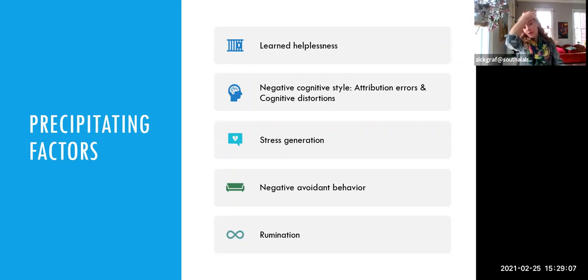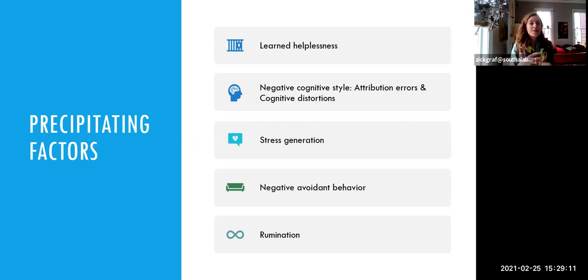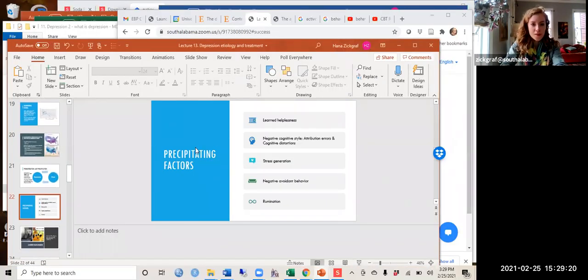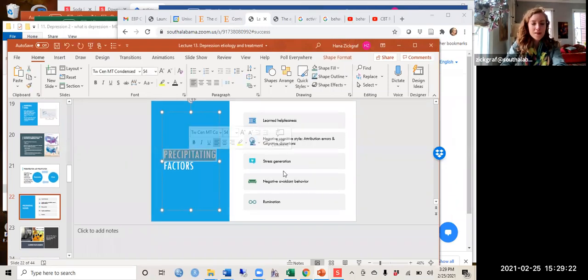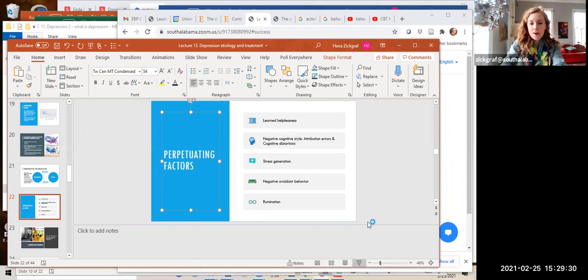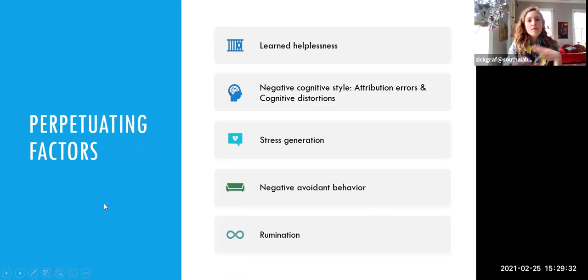Those were the predisposing factors and predisposing factors that interact with environmental precipitating factors. Now we're going to talk about perpetuating factors. As a quick overview, we're going to talk about five perpetuating factors of depression.